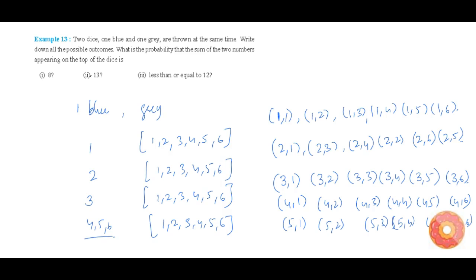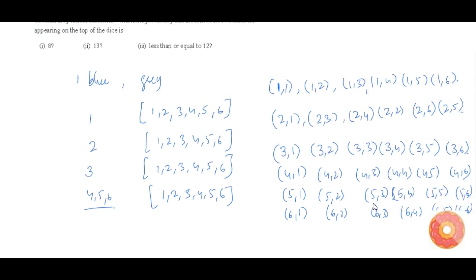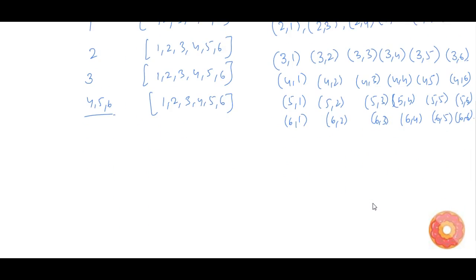Now in the case of six, the ordered pairs are: (6,1), (6,2), (6,3), (6,4), (6,5), and (6,6). The total number of possibilities is six times six, that is 36.